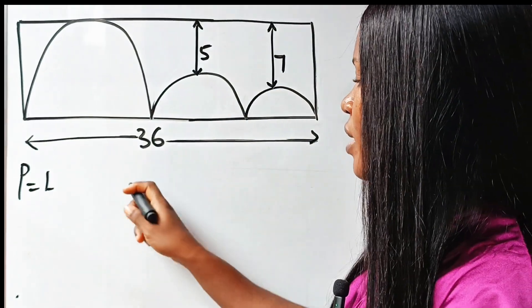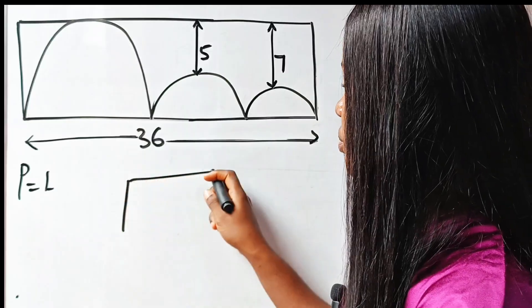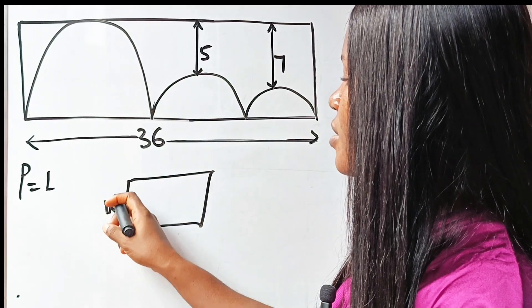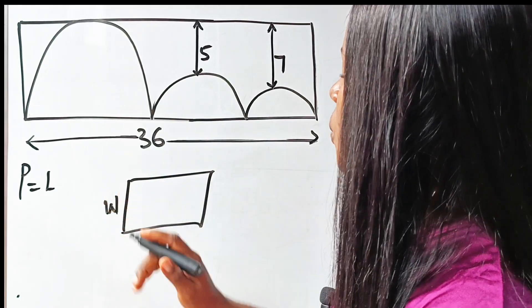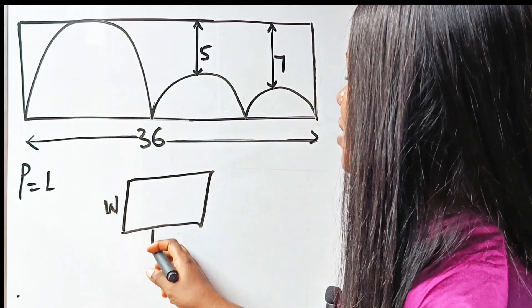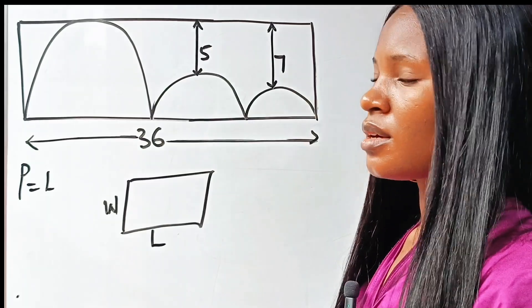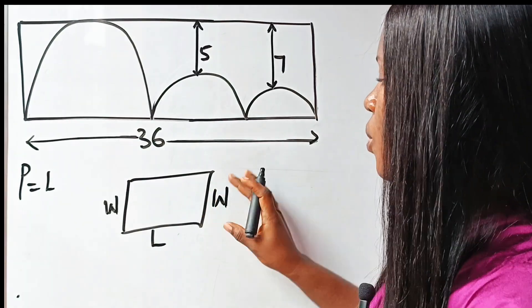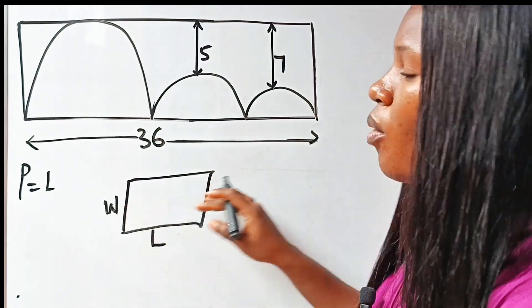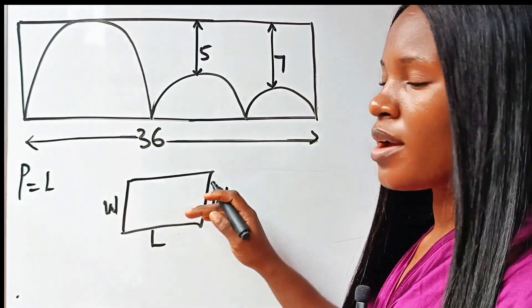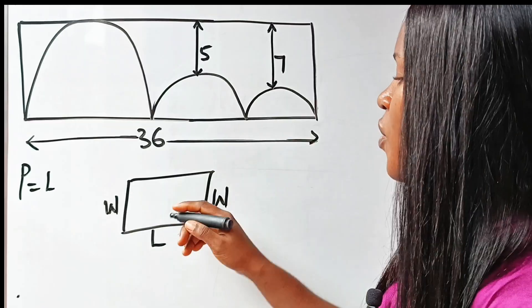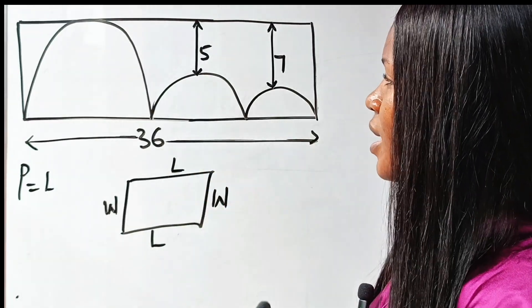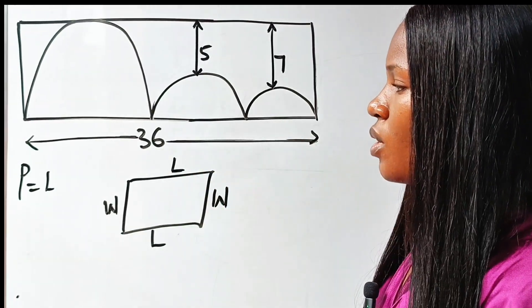For a rectangle, this is the breadth or the width, and this is the length. That means this is the width as well. Opposite sides of a rectangle are equal, and this is the length as well.